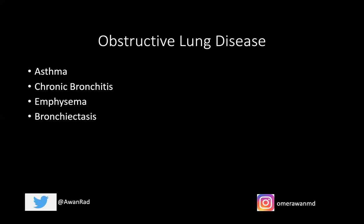Today we're going to talk about obstructive lung disease. There are four types: asthma, chronic bronchitis, emphysema — and by the way, chronic bronchitis and emphysema typically go hand in hand, as many patients have elements of both diseases — and bronchiectasis.